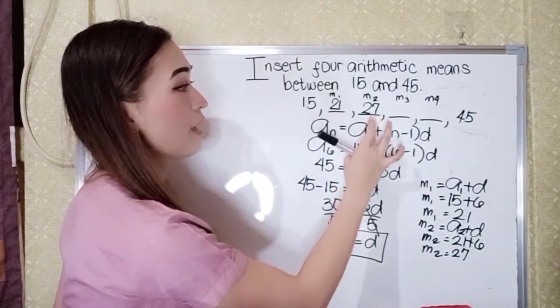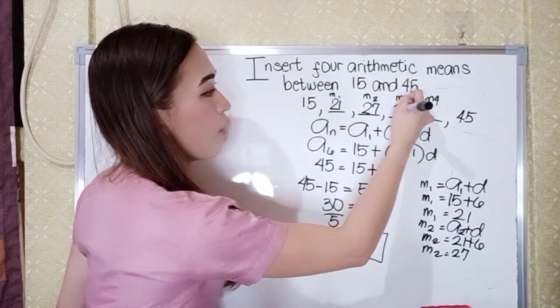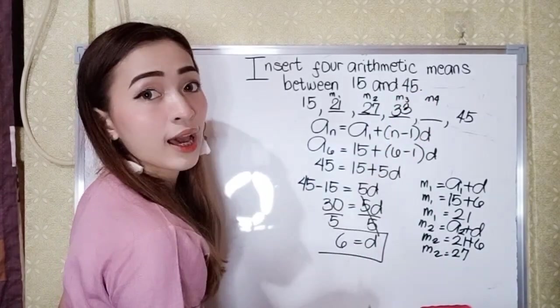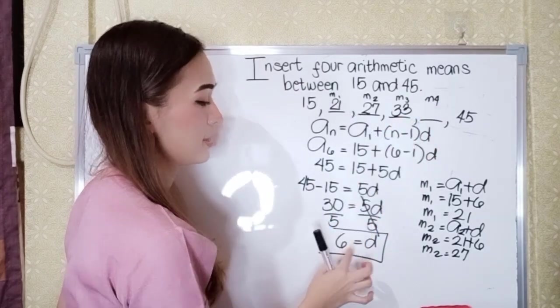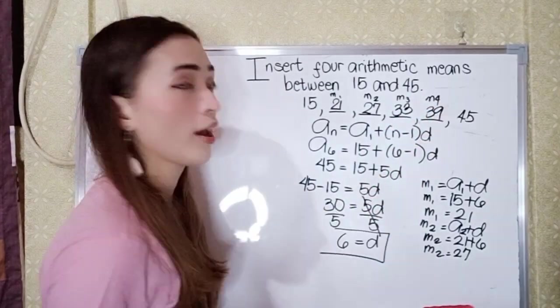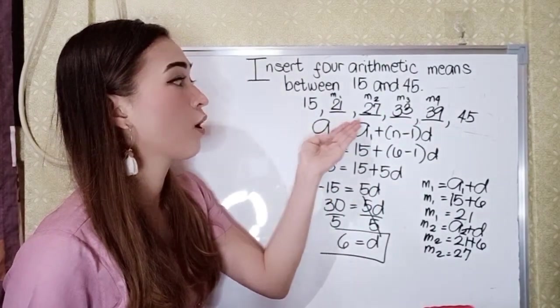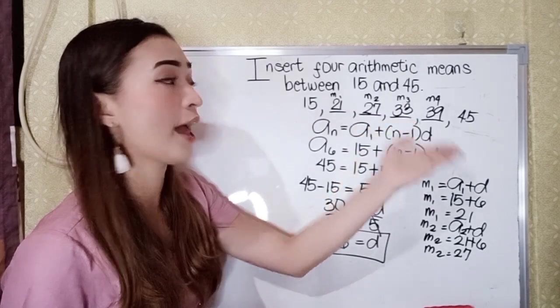Or in short, 27 plus 6 is 33. So our mean sub 3 is 33. Next, 33 plus 6, so that is our mean sub 4, so that is 39. So our 4 means here in the given is 21, 27, 33, and 39.